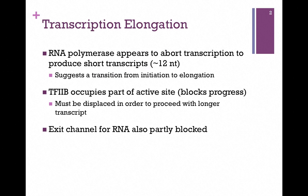RNA polymerase appears to abort transcription and thereby produce short transcripts of about 12 nucleotides. In other words, it begins but cannot proceed for a good portion of the time. This suggests a transition from initiation to elongation, and this led to studies to prove what that transition is. It was found that transcription factor 2b actually occupies part of the active site and thereby blocks progress — RNA polymerase can begin, but it cannot proceed so long as TF2b is blocking that active site.